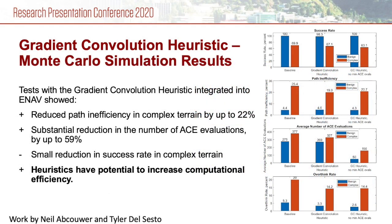We integrated the new heuristic into ENAV and tested it against the HDSim physics simulator in hundreds of Monte Carlo trials across an array of terrains with various slopes and rock distributions. The results showed that path inefficiency reduced by up to 22 percent and the number of ACE safety evaluations per planning cycle reduced by up to 59 percent.